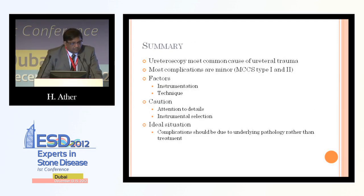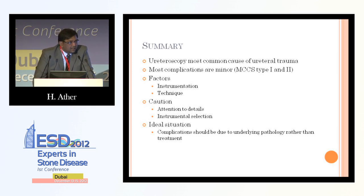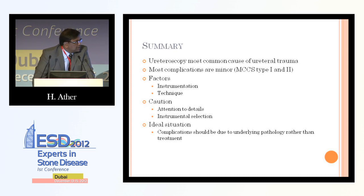In summary, ladies and gentlemen, Mr. Chairman: ureteroscopy is the most common cause of ureteral trauma — as urologists, we are the source. Fortunately, most of these complications are minor, MCSC class type 1 and type 2. The factors that have contributed are instrumentation and technique, both of which can be modified easily. It is important to pay attention to details, and instrument selection is key. Ideally, complications should be due to the underlying pathology rather than the treatment itself. Thank you very much for your attention.